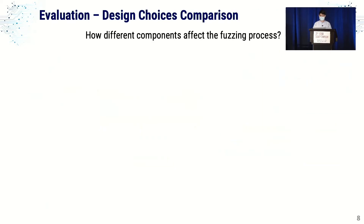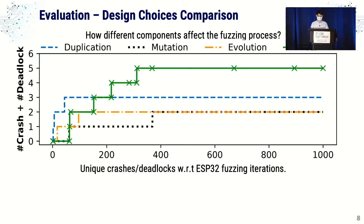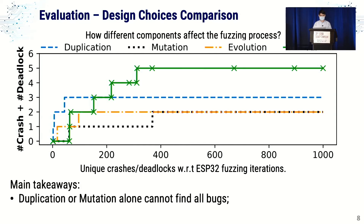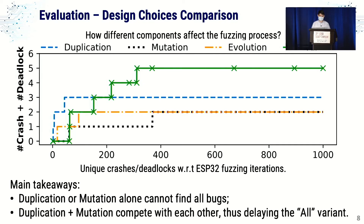In the evaluation, we assessed the impact of individual components on the overall fuzzing process. The vertical axis shows the number of crashes and deadlocks relative to iterations, and each line represents a variant. With all components enabled, we get the most crashes. The main takeaway is that duplication and mutation alone cannot find all crashes, since some crashes are specific to mutation or out-of-order packets. However, when duplication and mutation run together they compete, delaying early iteration crashes.